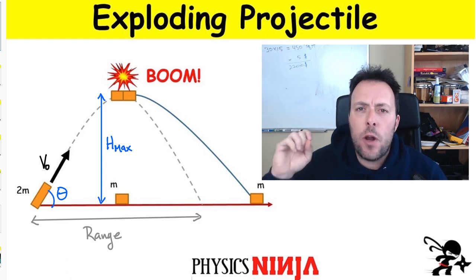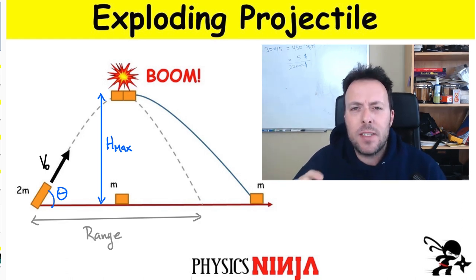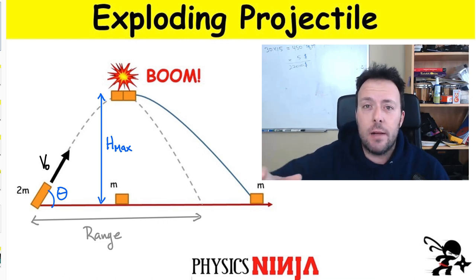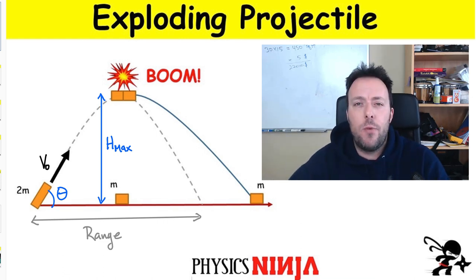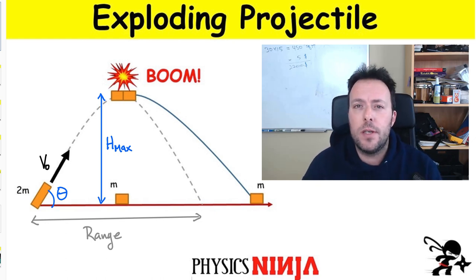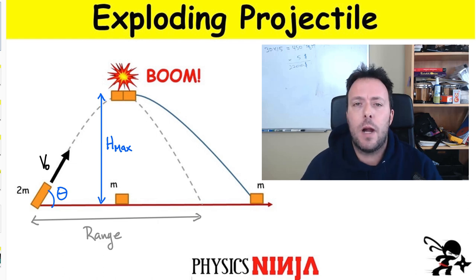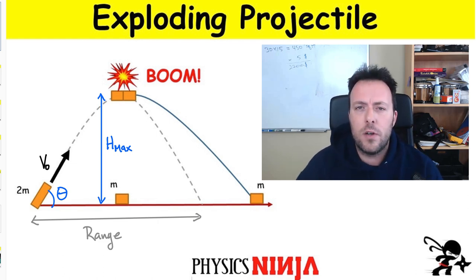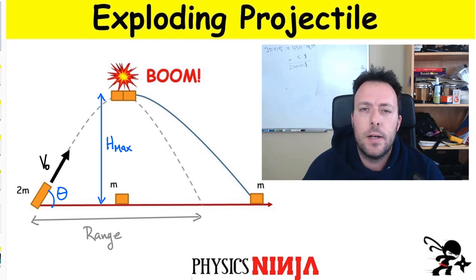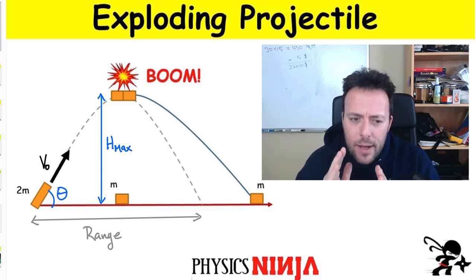Hi everybody, Physics Ninja. Today I want to look at an exploding projectile problem — this is a combination of projectile motion and conservation of momentum. You can also solve this problem using the position of the center of mass. So I'm going to do it two ways: first part, conservation of momentum; second part, position of the center of mass. Let's start by thinking about the problem.